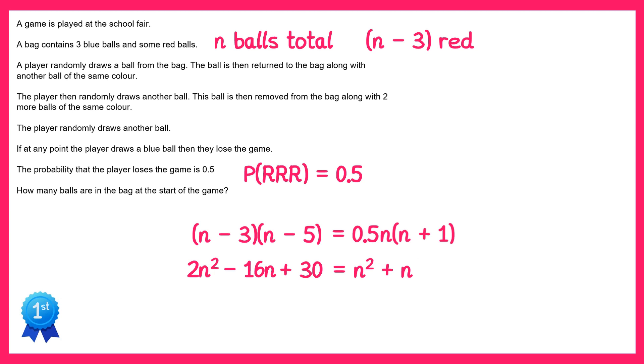Now if we subtract the terms on the right hand side from both sides to get all terms on the left. So if we take away n squared and take away n, we end up with n squared, take away 17n plus 30 equals 0.